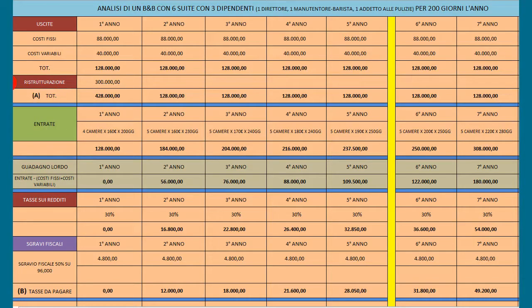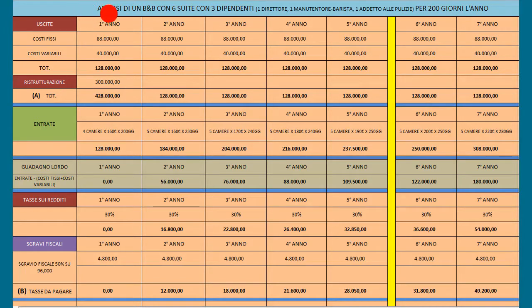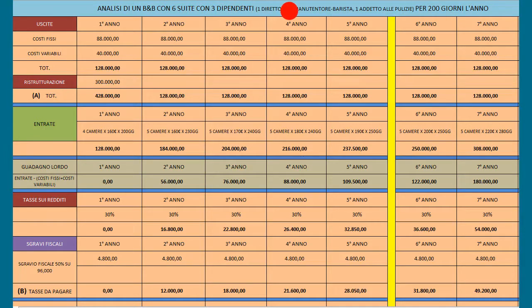Ecco la tabella: come puoi vedere è molto semplice. Il titolo è «Analisi di un B&B con 6 suite», con 3 dipendenti: un direttore, un manutentore, un barista, un addetto alle pulizie, eccetera.